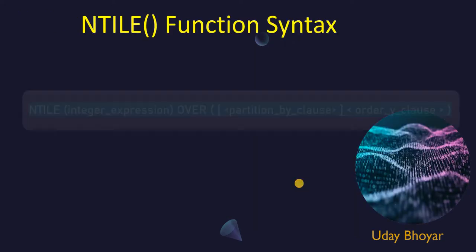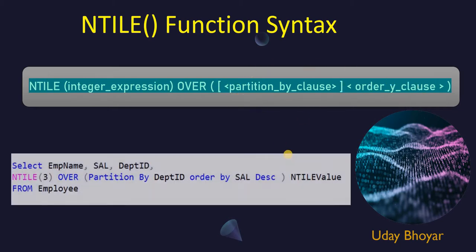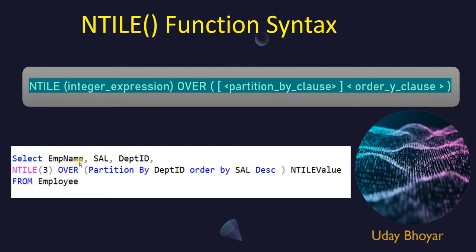Let's look at the syntax for the NTILE function. The syntax is quite simple: it has the NTILE keyword followed by an integer expression specifying how many divisions to create, then the mandatory OVER clause used in all window ranking functions, followed by the optional PARTITION BY clause and the ORDER BY clause. In the example query shown, we are pulling employee name, salary, and department IDs from the employee table, with the NTILE function dividing department IDs into three equal groups ordered by salary in descending order.